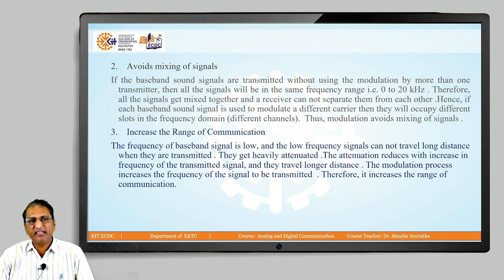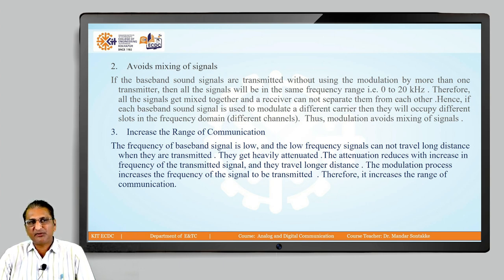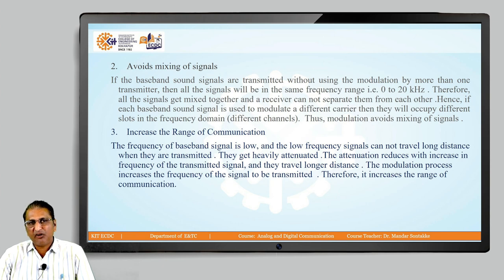The third reason is to increase the range of communication. Baseband signals are low frequency and get heavily attenuated when transmitted, so they cannot travel long distances. Attenuation reduces as the frequency of the transmitted signal increases. The modulation process increases the frequency of the signal, therefore increasing the range of communication.